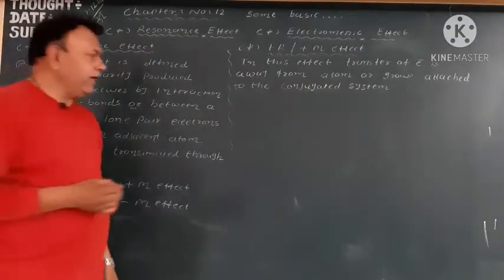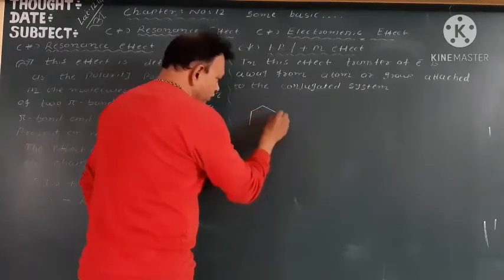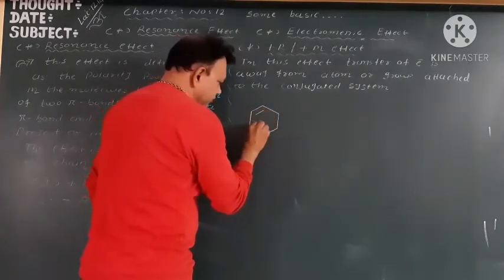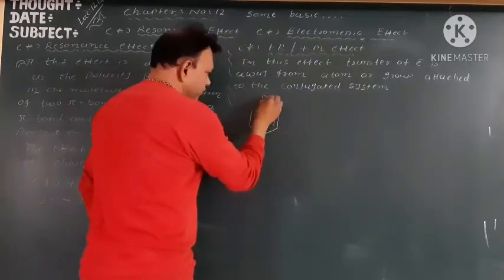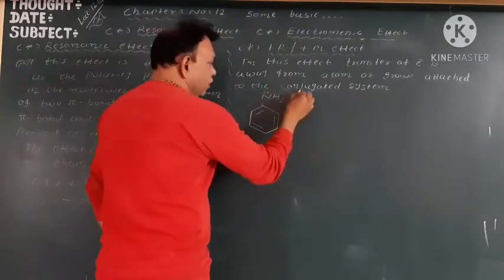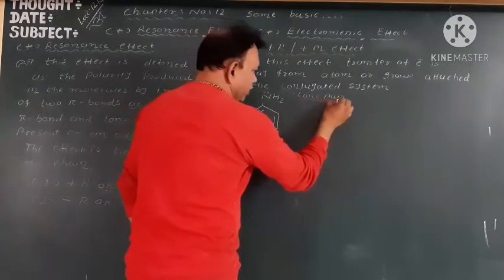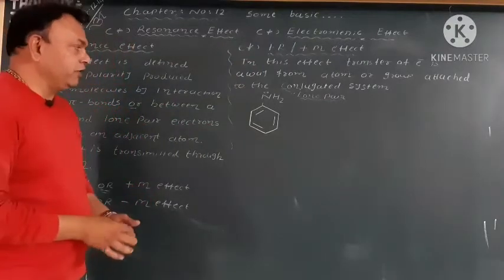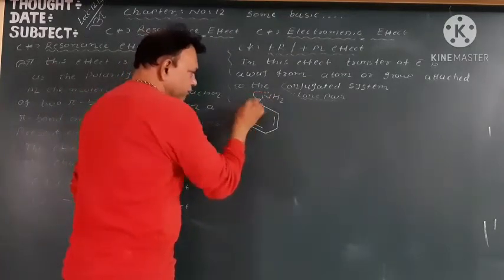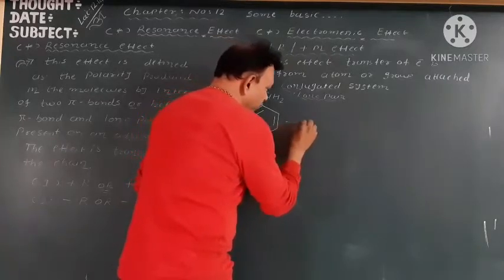Yaha pe ek example — like aniline. Toh aniline ka example le rahe hain. Pura samjho. Jaise humne inductive effect padha tha, aur doosra kya — transfer of electron from one to another atom. Toh yaha pe we have the content like aniline — NH2, that is called aniline. Jo extra hai, this electron that is called lone pair electron. The electron pair that does not take part in chemical bond is called lone pair. This electron is going towards the bonding side — that is called lone pair to pi bond.